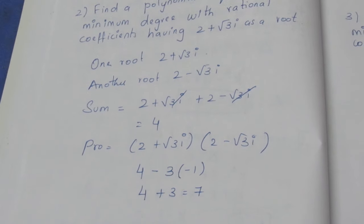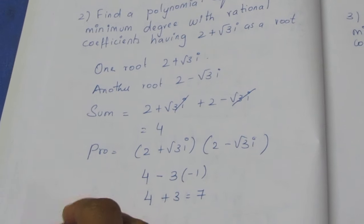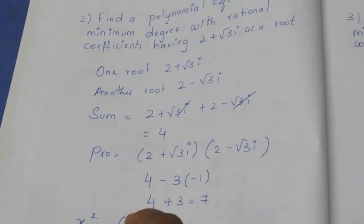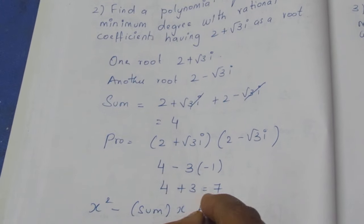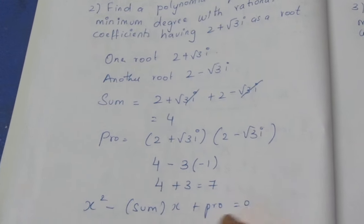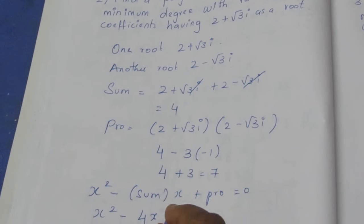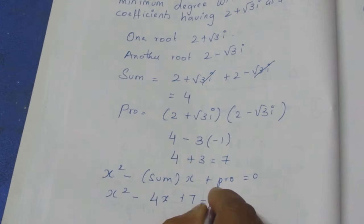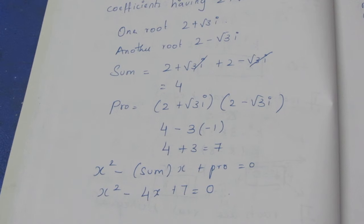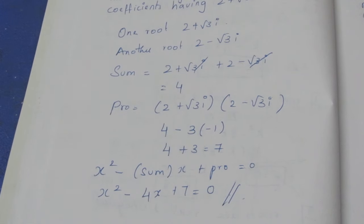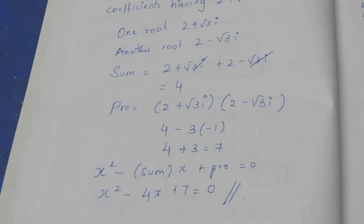For a quadratic equation, the form is x squared minus sum times x plus product equals 0. So x squared minus 4x plus 7 equals 0. This is the polynomial equation. Thank you.